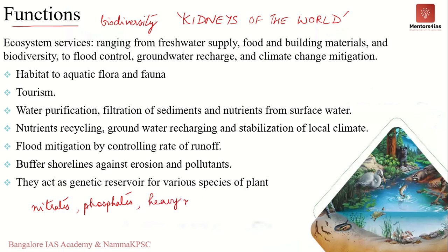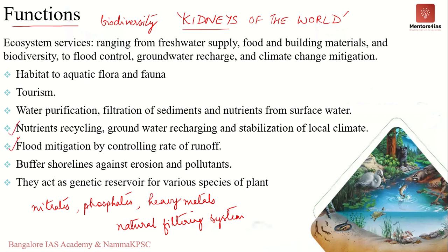Water hyacinths and weeds present in wetlands remove these pollutants, so wetlands act as a natural filtering system, thereby purifying water — which is why they are known as kidneys of the world. However, pumping in new nutrients can also lead to eutrophication. Apart from that, wetlands perform several other functions: nutrient cycling, flood mitigation, maintenance of stream flow, groundwater recharging, control of urban runoff, buffering shorelines against erosion, stabilization of local climate, providing fishing zones, and acting as a genetic reservoir for various species.